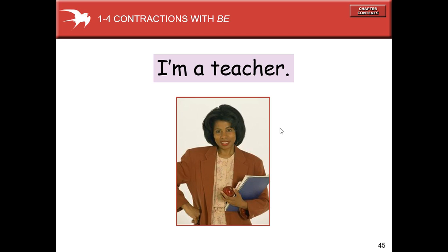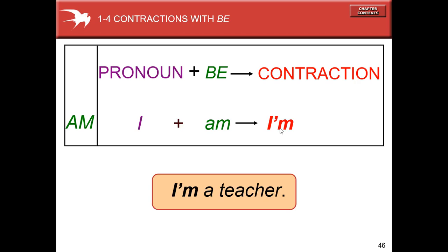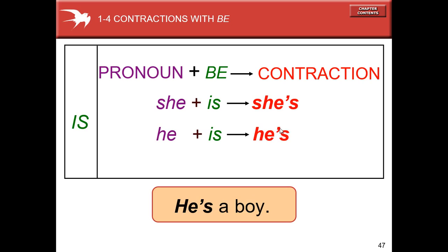Now contractions with the verb to be. I'm a teacher — when we speak, we usually use contractions. We have the pronoun plus the verb to be as a contraction: I am becomes I'm. I'm a teacher. She is becomes she's — she's a girl.